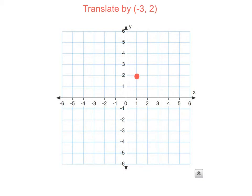This time, we're going to translate by negative 3, 2. Because it's negative 3, we're going to take x minus 3. But it's still positive 2, so we're going to have y plus 2.